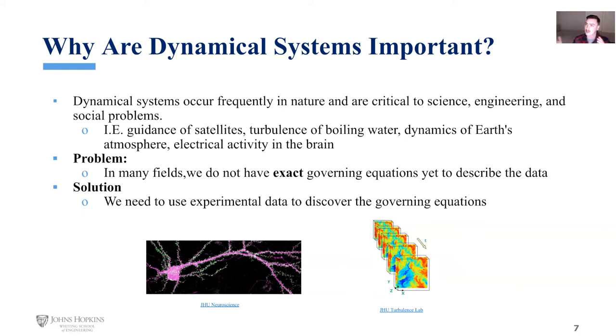To even things like the guidance of satellites, to the dynamics of Earth's climate and trying to work with climate science, to the electrical activity in the brain. And specifically with turbulence and electrical activity that goes on in the brain, those are relatively new areas of science that don't have strict governing equations yet. There are many areas in physics and mathematics that are dynamical, but they have great underlying equations, things like the double pendulum. But in these new areas of science, there's so much raw data being collected, but it's really hard to work with it sometimes and find underlying models so you can predict things in the future consistently because there are not exact governing equations yet to describe that data.